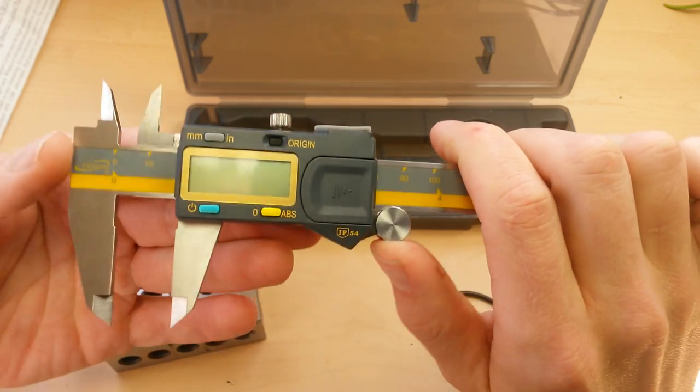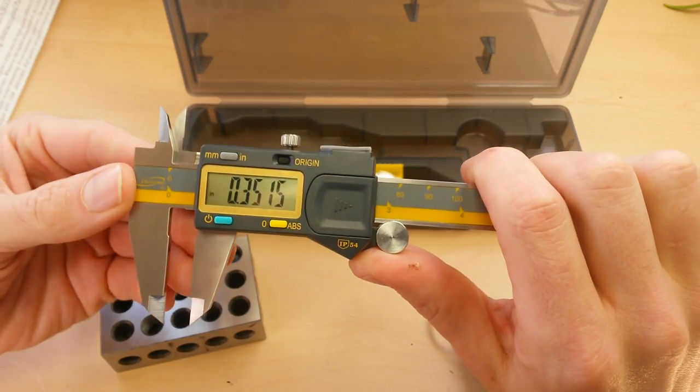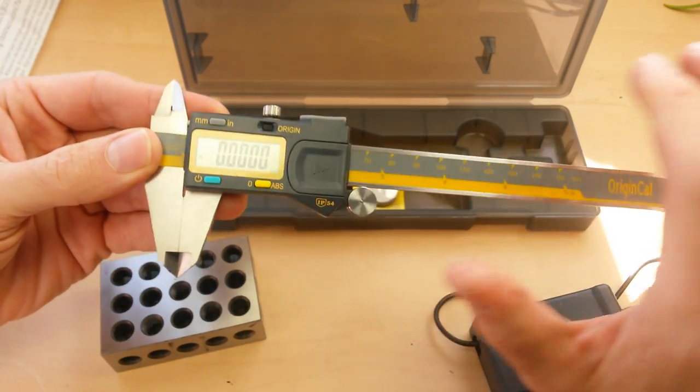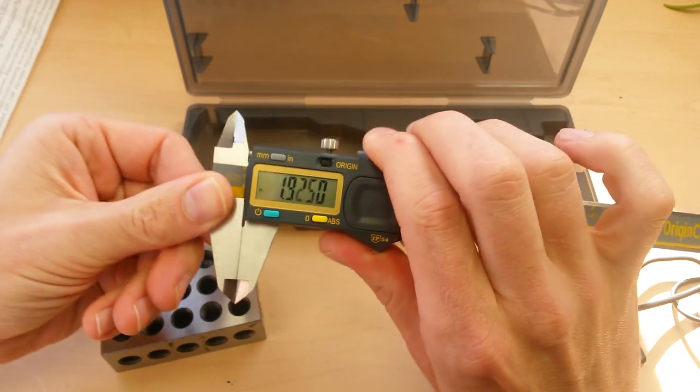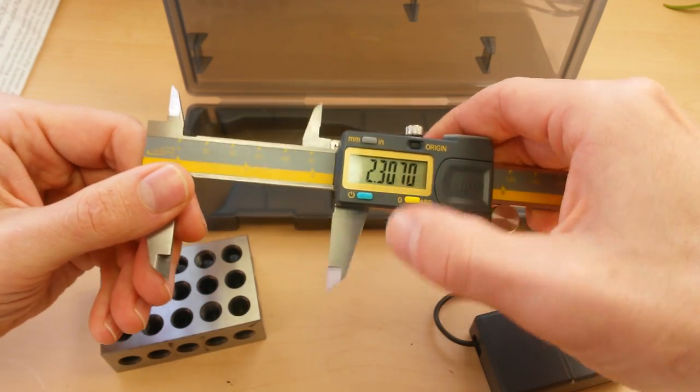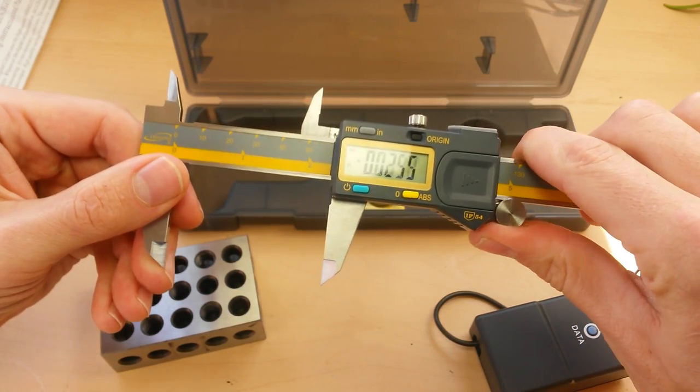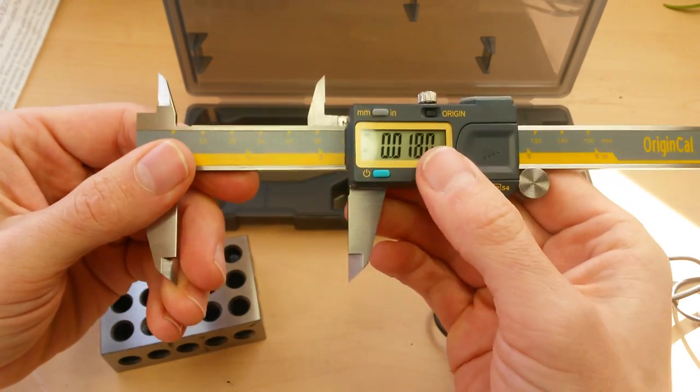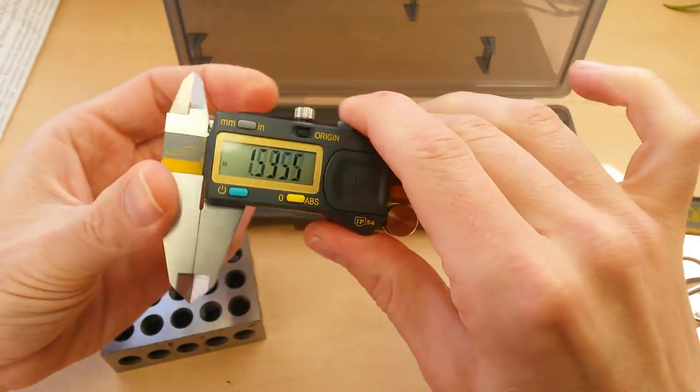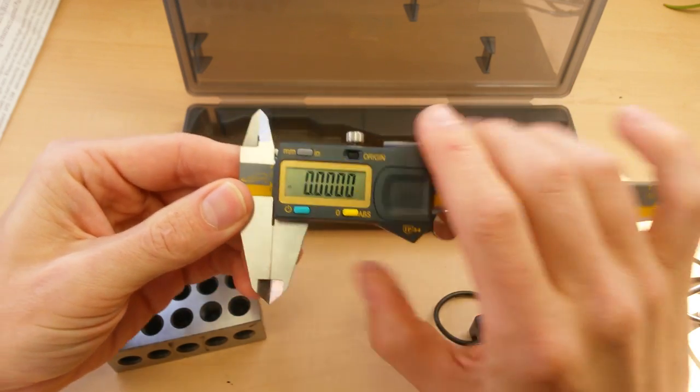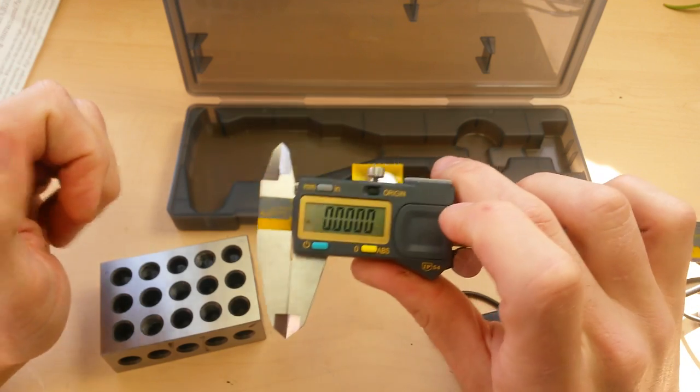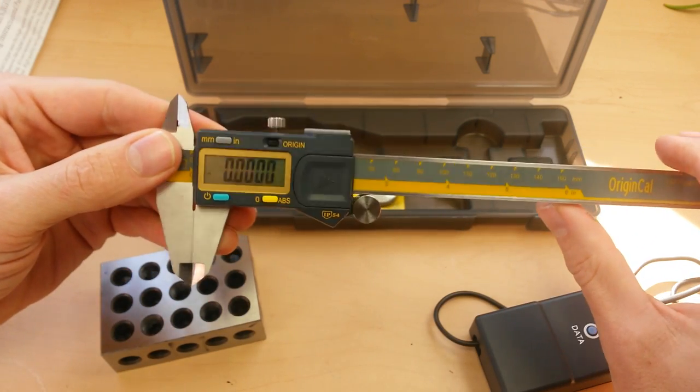If you're not sure what Absolute Origin means, it means that the caliper always knows where it is in relationship to its set zero or origin point at all times. It doesn't matter how fast you move the measuring body. There's no speed limit. It doesn't matter if you come out here, set in increment mode, and measure in relationship to a certain spot. You can always come back to your set origin point, and it always knows where it is in relationship to zero. That kind of accuracy in relationship to zero is very important for doing fine measurement.